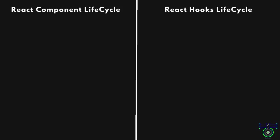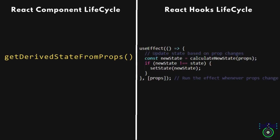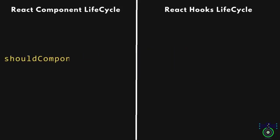Next we examine the getDerivedStateFromProps equivalent. Inside the useEffect block, const newState equals calculateNewState(), which calculates a new state based on current props using the calculateNewState function (assumed to be defined elsewhere in the component). A condition then checks if the newly calculated state differs from the current state — if it does, it updates the state using the setState function, ensuring state is only updated when there is a change. The dependency array passes props as the second argument to useEffect, meaning the effect will run whenever the props variable changes.